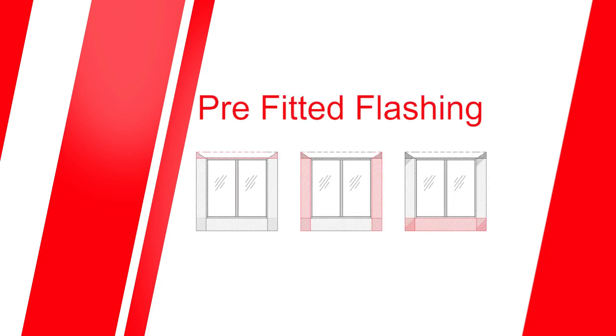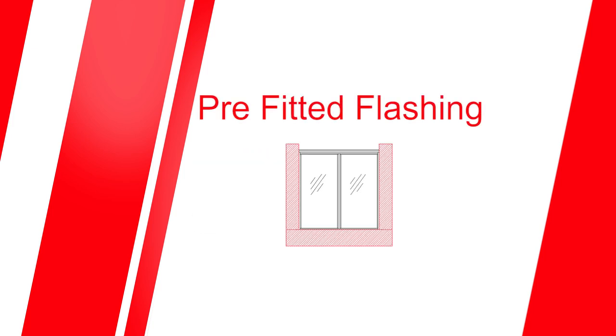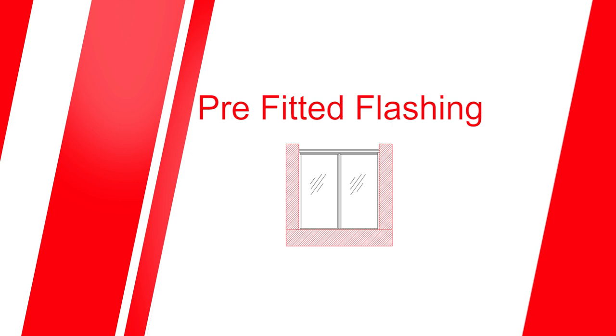Some window suppliers pre-fit flashings to the windows. This window came with the seal and jam flashing already fitted. Note that the flashings extend about 150 millimeters on either side of the window. Remember to ask your supplier when ordering your window if this is an available option.